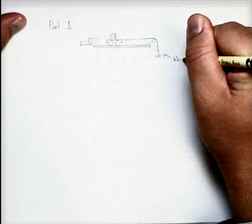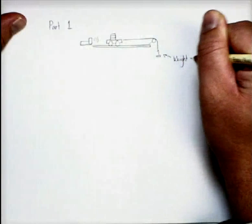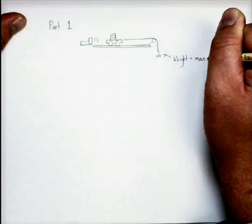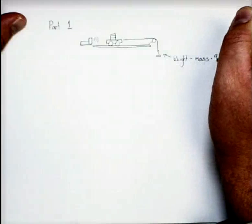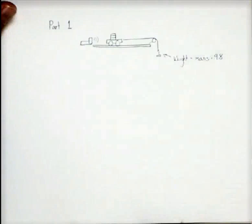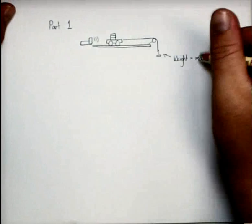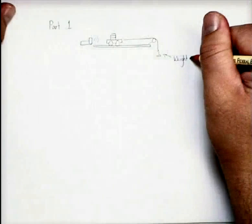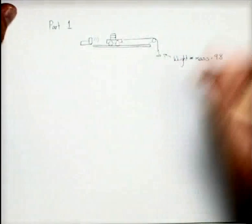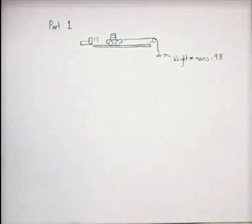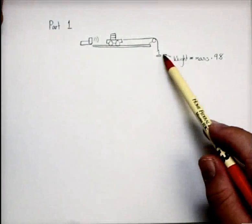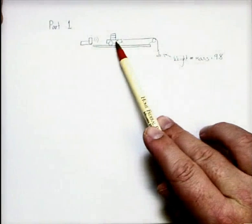And remember that weight is a force and it's equal to mass times 9.8 meters per second squared. So that's mass times the acceleration due to gravity. And in case this video is very small for you, that's an equal sign there.